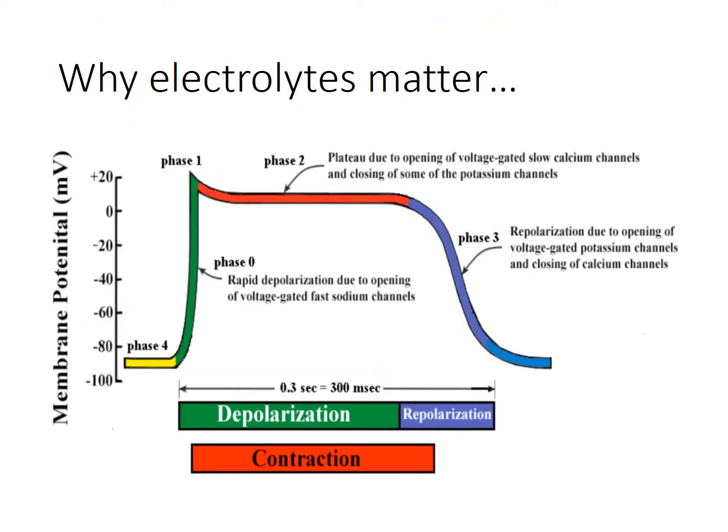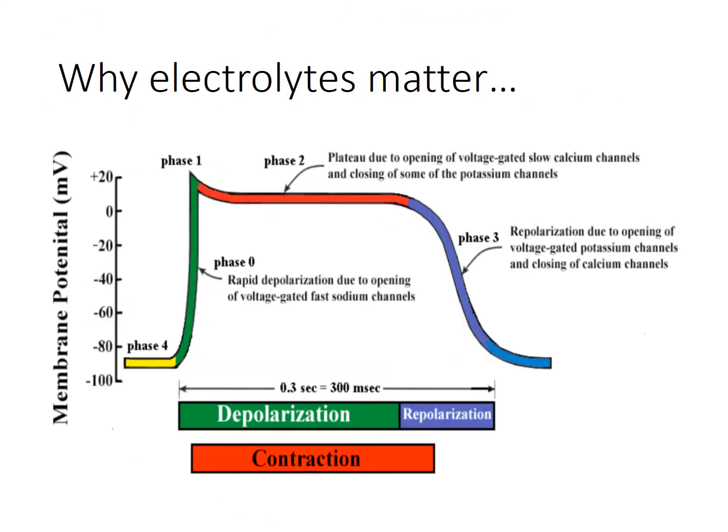Last week we covered bradycardia. So why do electrolytes matter? In phase zero we're dealing with rapid depolarization, so we're looking at sodium channels. When our sodium levels are off, that will affect this phase. Medications like procainamide, lidocaine, and to a lesser extent amiodarone affect sodium channels. Phase two involves the slow calcium channels and potassium channels, and phase three is repolarization due to opening of the potassium channels.